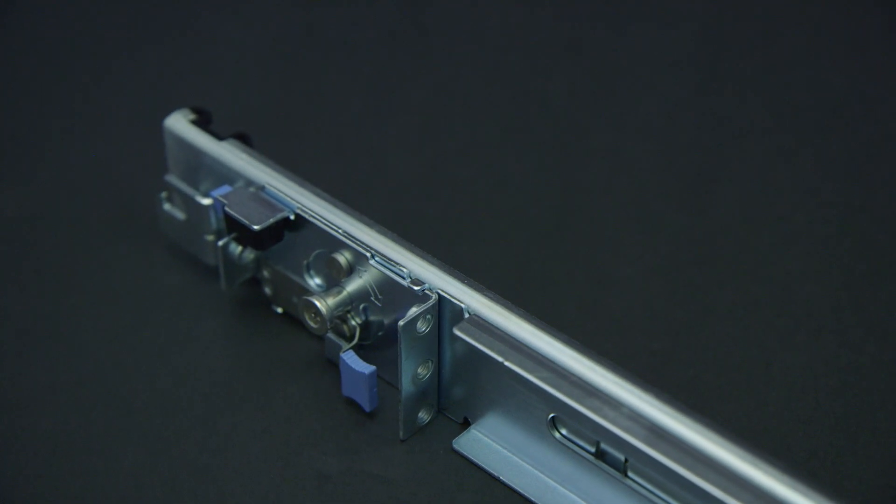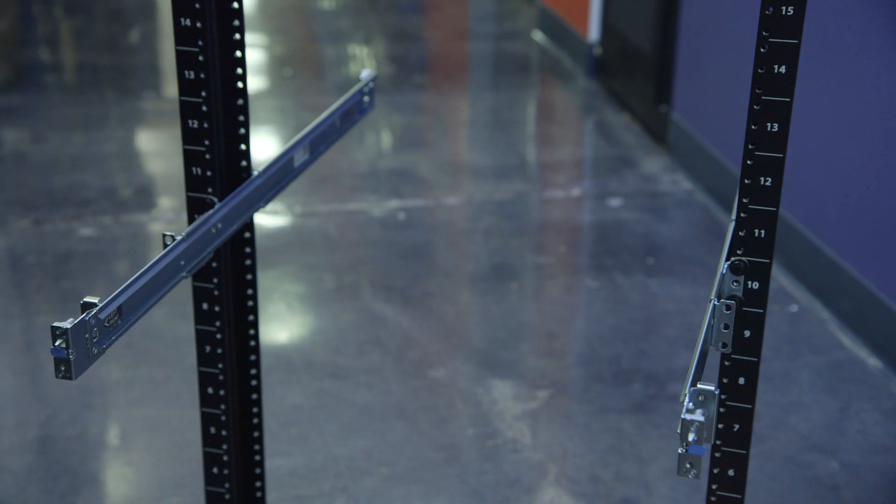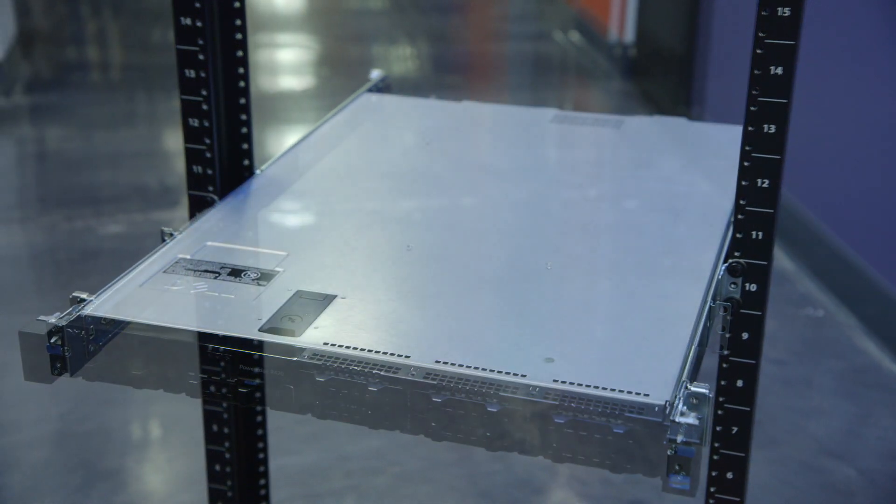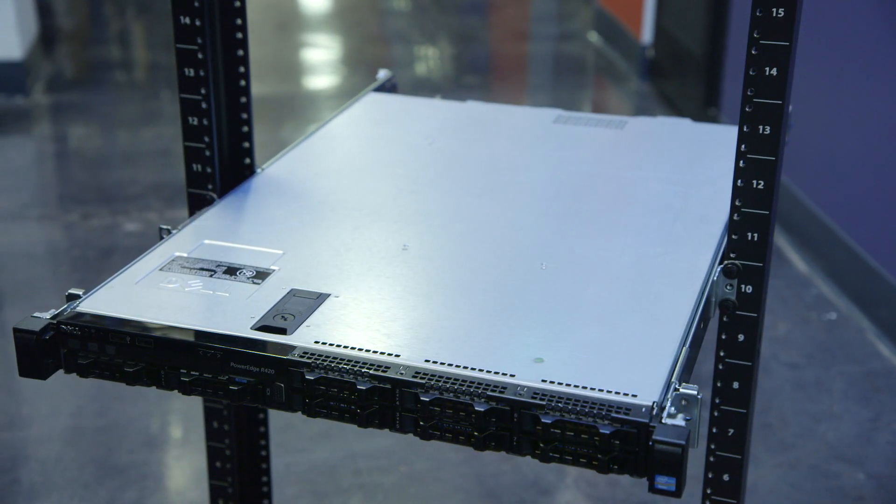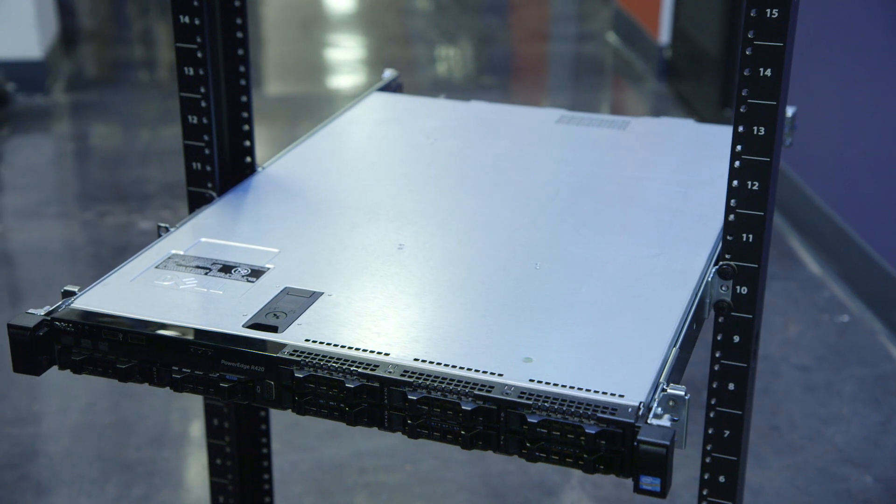To purchase the correct rail kit for your system, you need to know the type of rack you have and the model of server you're mounting. For example, if you wish to mount a Dell R420 server in a two-post rack, you would need a two-post Dell rail kit for the R420.